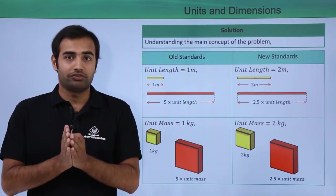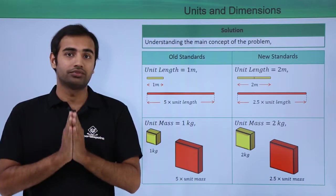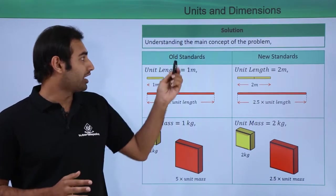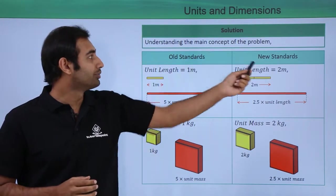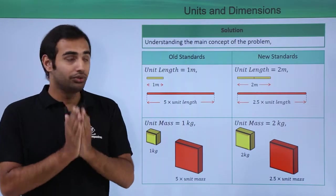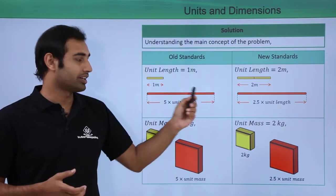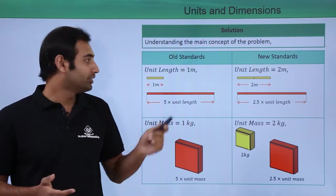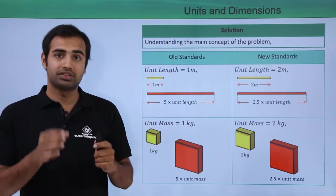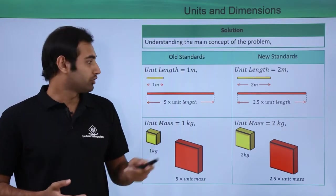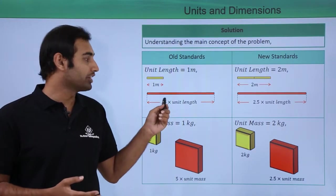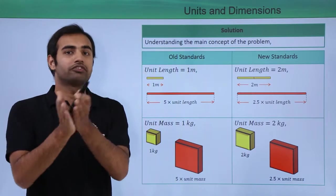So let's start off by understanding the basic idea of this question. So over here, I have made a table with old and new standards. Now in the old standard, I have 1 meter as my standard unit of length. And let's say I have to measure this red rod over here. Now I know that this red rod is 5 times this yellow rod which is my standard. So I will say the length of this rod is 5 times the unit length or 5 meters.